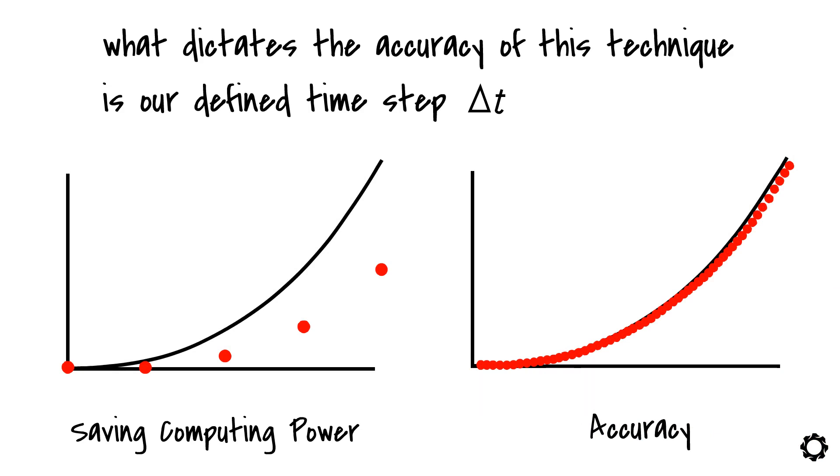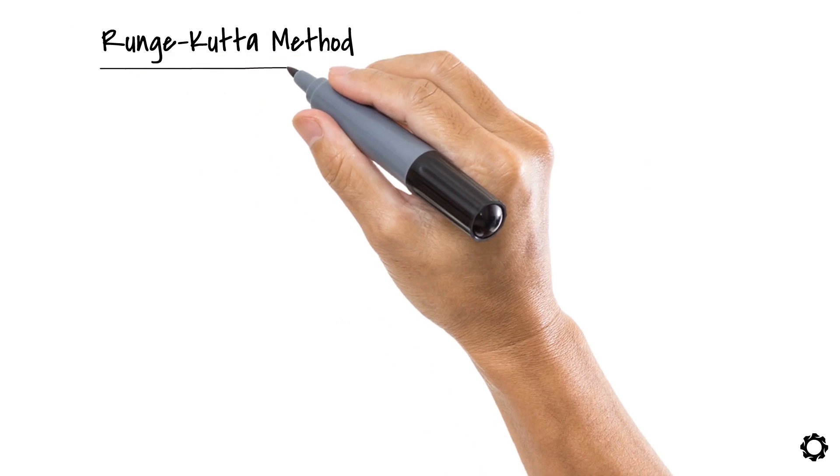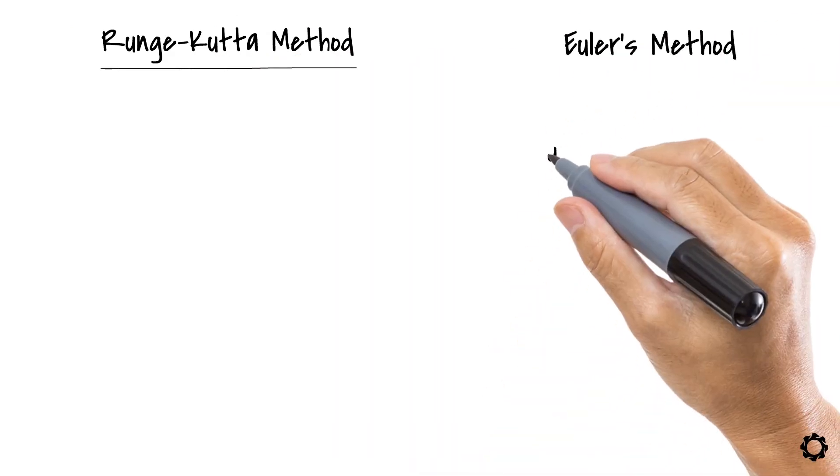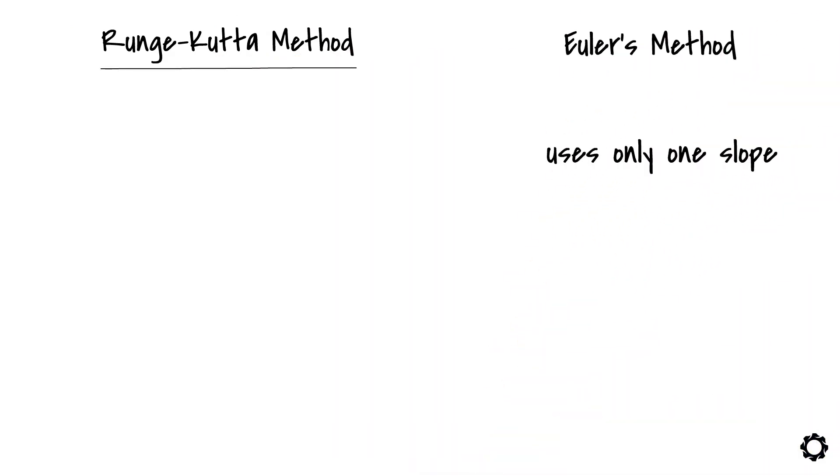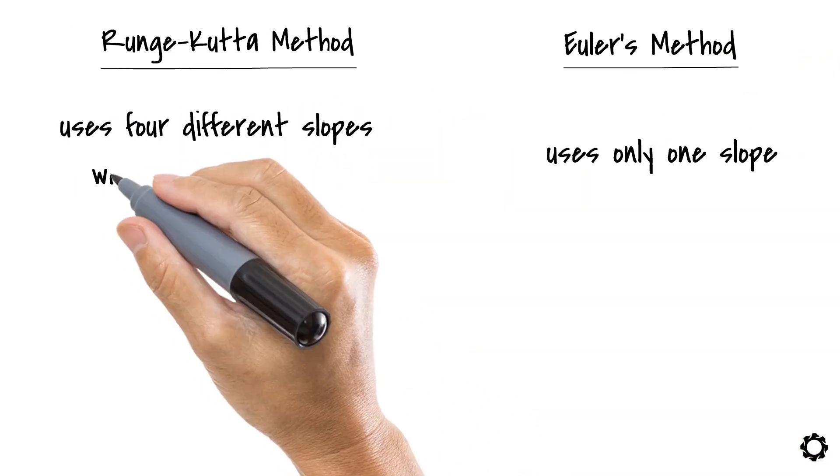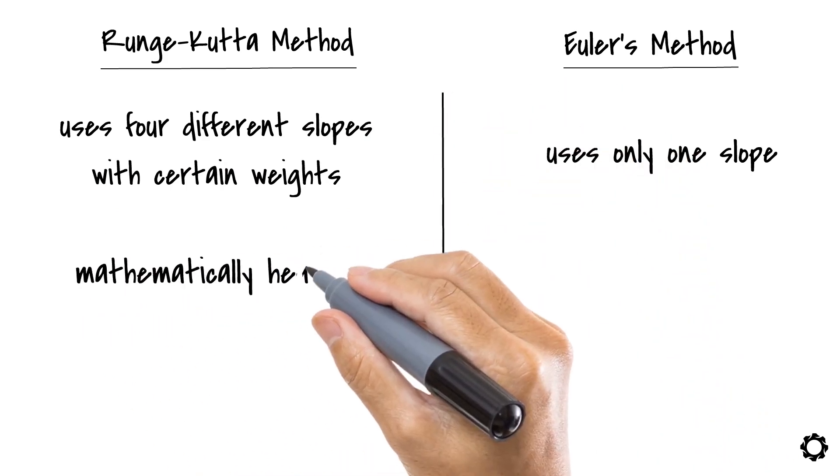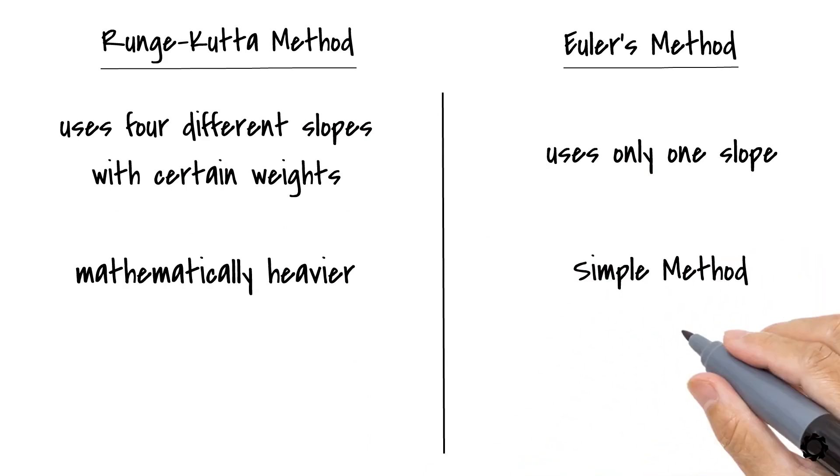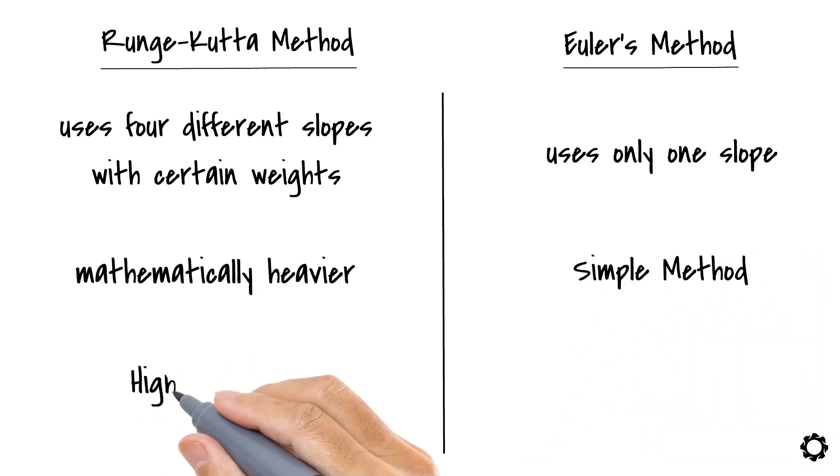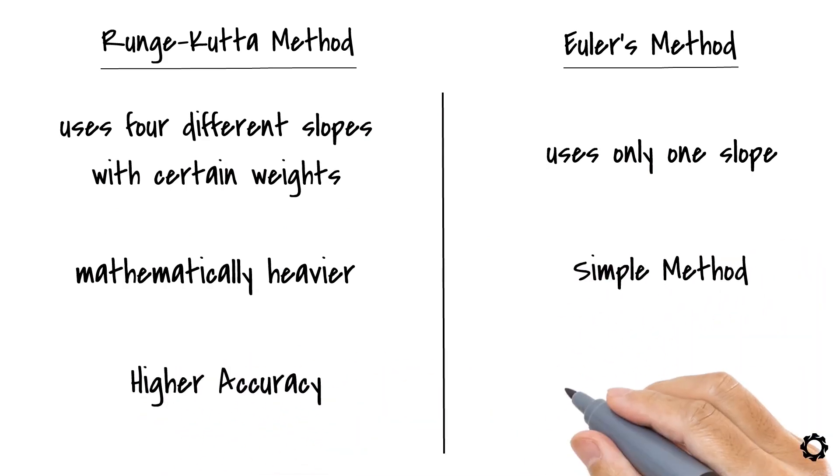Let's discuss briefly about the Runge-Kutta method. Unlike Euler's method which uses only one slope to determine the integral value during one time interval, the Runge-Kutta method uses four different slopes which have certain weights for the same approximation. This causes the method to be mathematically heavier compared to Euler's method, but the possible errors caused by choosing an improper time step are minimized.